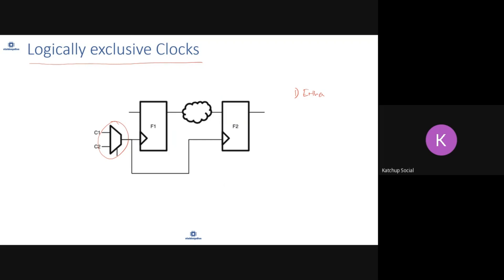A typical example is when clocks are going through a mux. Like C1 and C2 going through a mux — after the mux, only one of the clocks can exist, because of the select condition: either select will choose C1 or it will choose C2. These clocks are known as logically exclusive clocks.